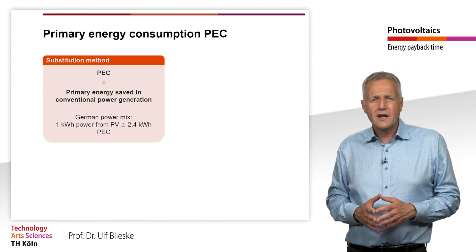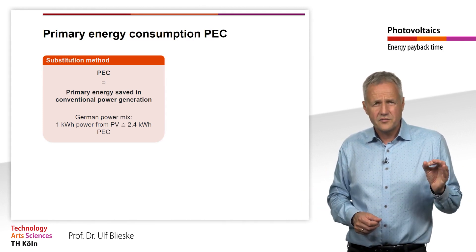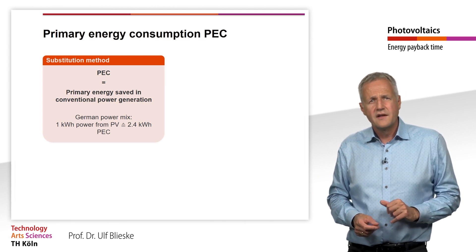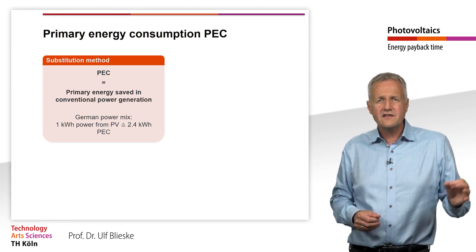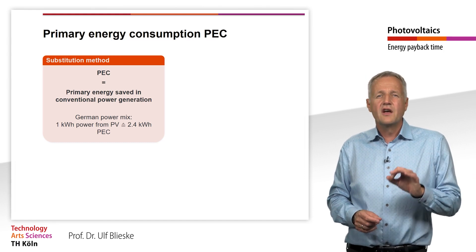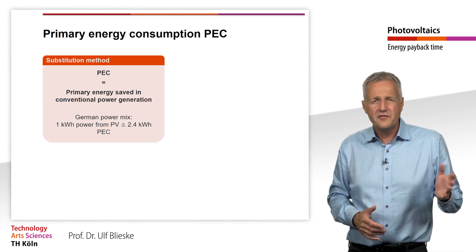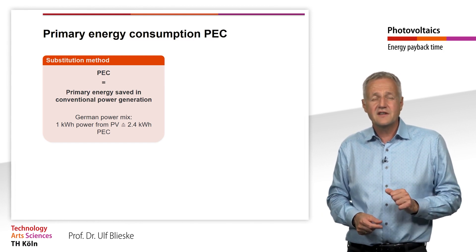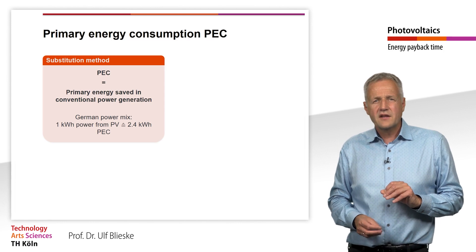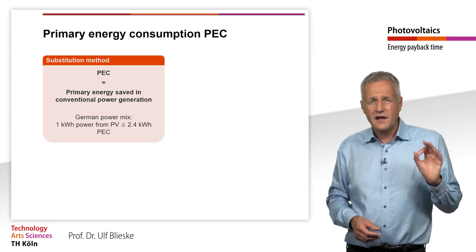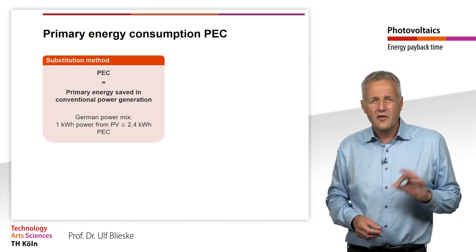There are two methods for calculating the primary energy consumption of these power sources: the substitution method and the efficiency method. In the substitution method, it is assumed that electricity from the corresponding energy source replaces or substitutes electricity generation in conventional thermal power plants. The energy of the conventional energy sources that would have been required to generate the substituted electricity is then used as the primary energy demand. In the German electricity mix, for example, 1 kWh of electrical energy from PV replaces 2.4 kWh of primary energy from conventional power plants.